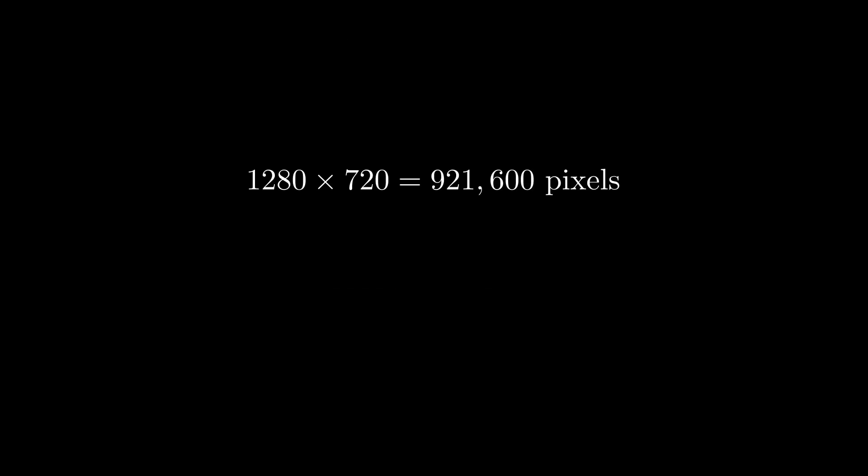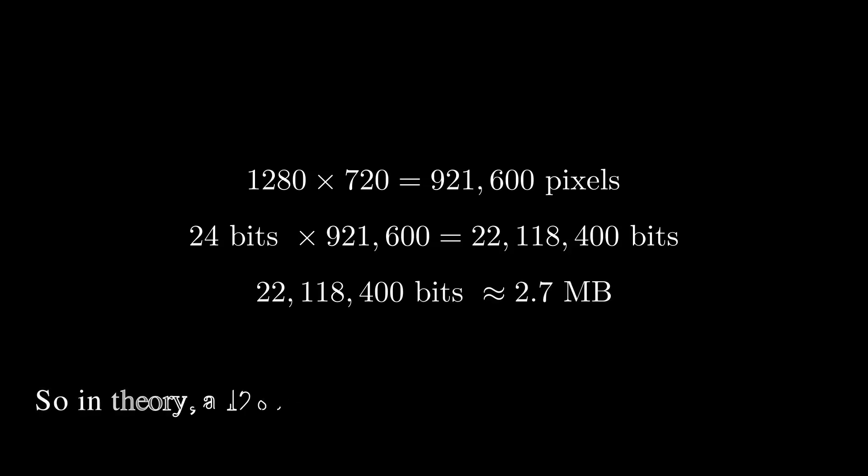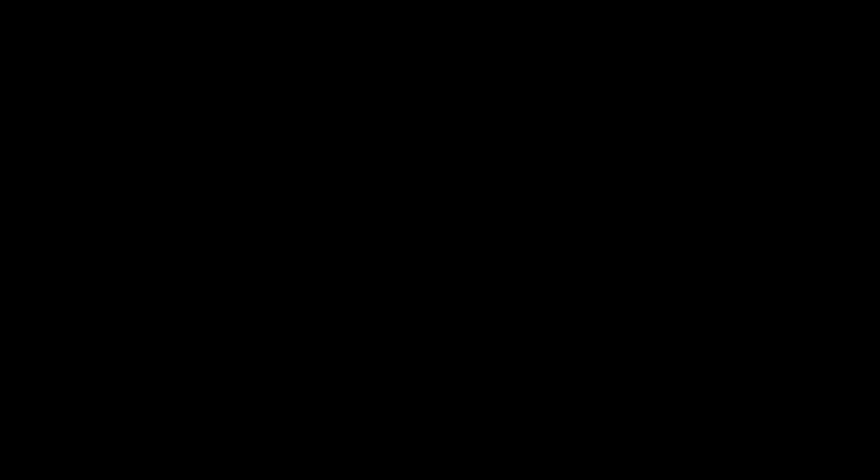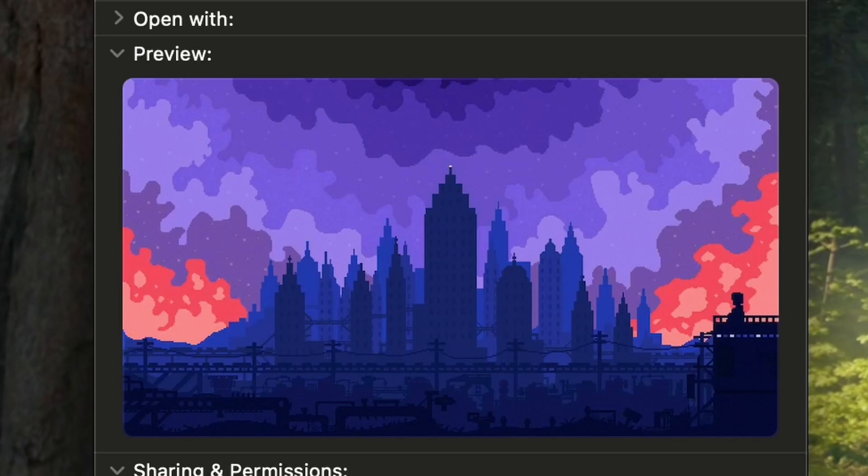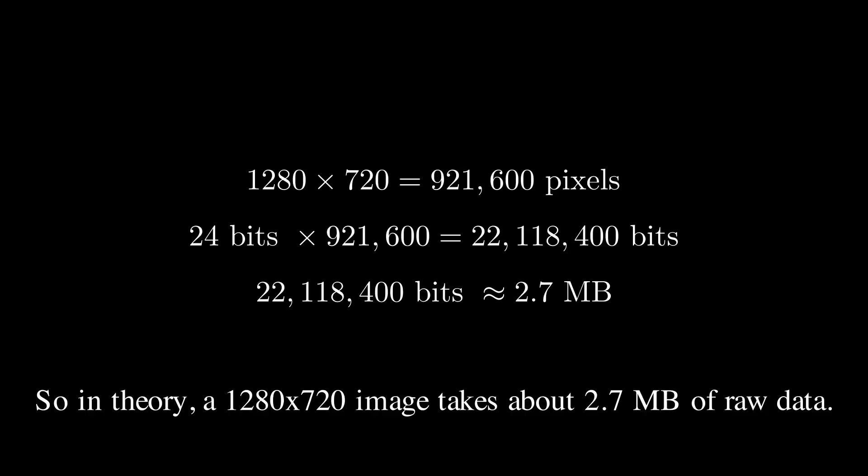So 24 bits per pixel times 921,600 pixels equals to 22,118,400 bits or about 2.7 megabytes. So in theory, every image of that size should be 2.7 megabytes, right? And yet, that's not what we see. Some images are way smaller and they differ. Like this one. It's 1280 by 720 but only 983 kilobytes. So how did we make our images smaller than that 2.7 megabyte we calculated earlier?